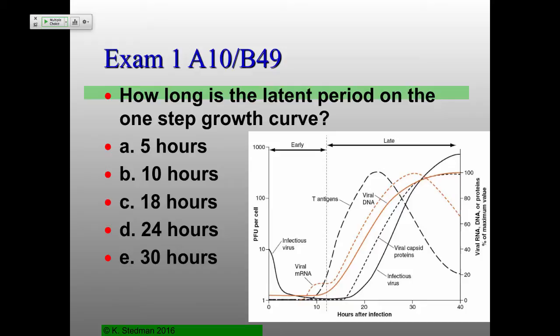A couple of people also asked about burst sizes. That's simply the number of infectious virus particles per cell — the maximum on the log scale is going to be about 500 or so. Any other questions about the one-step growth curve? We're probably not going to look at too many more of them for the rest of the term.